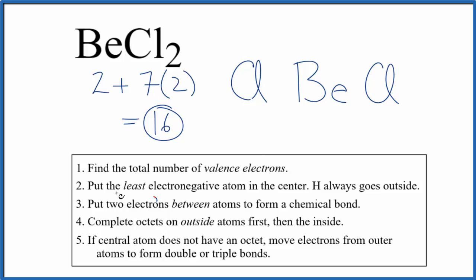Now we're going to put a pair of electrons between atoms to form the chemical bond. So we put two here, and then here, and we formed our chemical bond.